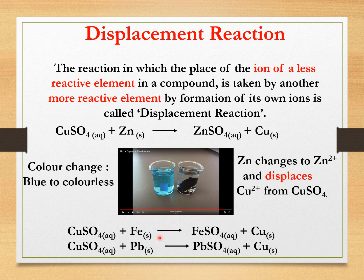Two more examples: to the copper sulfate solution, we add iron (Fe) and we get FeSO₄ plus Cu. And we add lead (Pb) to CuSO₄ solution and what we get is PbSO₄, that is lead sulfate, and copper.